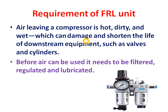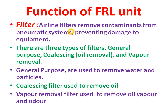Now we'll see the function of the filter in the FRL. The airline filter removes contaminants from the pneumatic system to prevent damage to equipment. Generally, there are three types of filters: general purpose, coalescing type, and vapor removal. General purpose filters are used to remove water and dust particles from compressed air. Coalescing filters are used to remove oil, and vapor removal filters are used to remove oil vapor and water vapor present in the air.